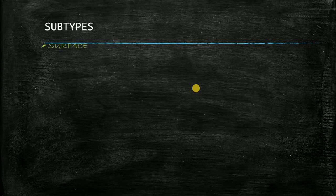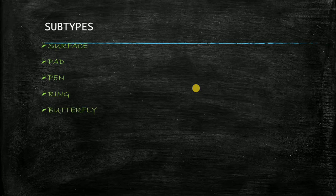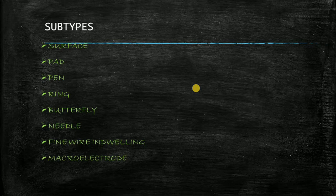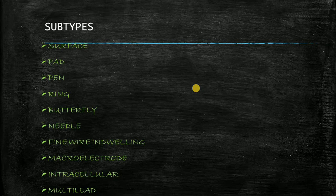So there are many sub types of electrodes which are surface, pad, pen, ring, butterfly, needle electrode, fine wire indwelling, macro electrode, intracellular electrodes, and the multi lead electrodes.